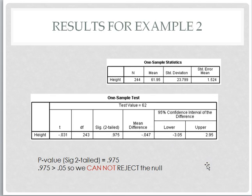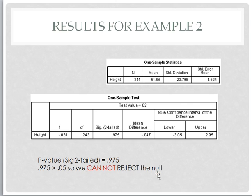The results listed by SPSS give us the t-test value, which is actually quite small — very close to zero. And it gives us the p-value, which is quite large. Our p-value of .975 is well above our alpha value, so we most certainly cannot reject the null hypothesis. And that makes sense because the mean of our sample is almost identical to our population mean, so it certainly wouldn't be significantly different.